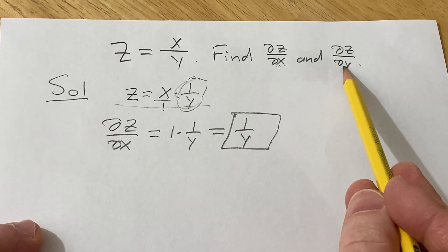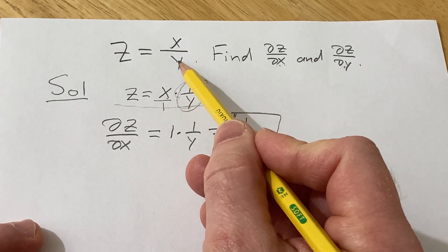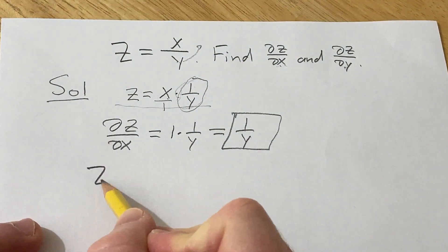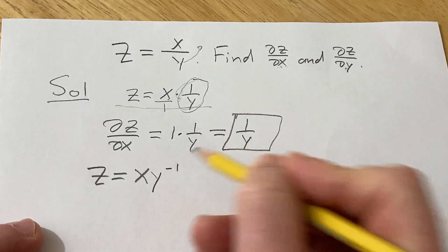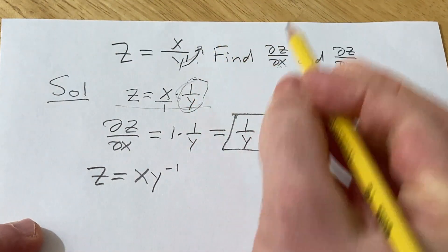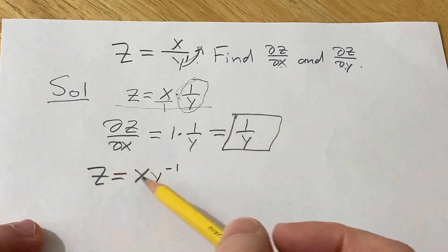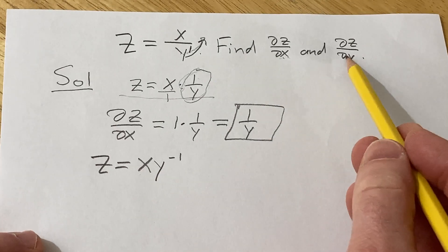So to find del z del y, the x is a constant. So in this case, because the y is on the bottom, let's bring it up so we can write z equals x times y to the negative 1. And there's really a 1 here. So when you bring it upstairs, the 1 on the exponent becomes negative. All right, so now we're going to differentiate this, and the x is a constant because we're finding del z del y.